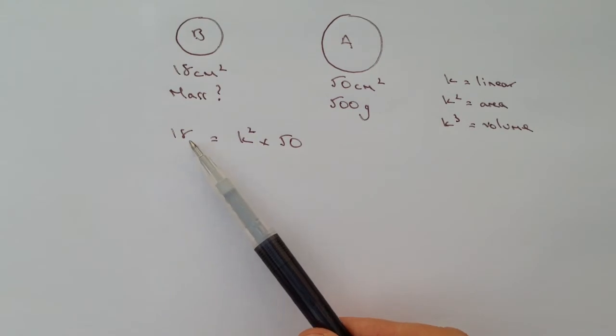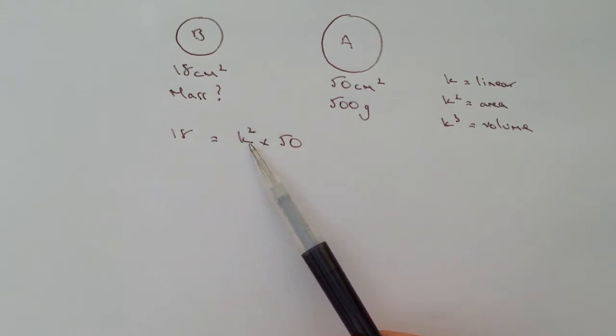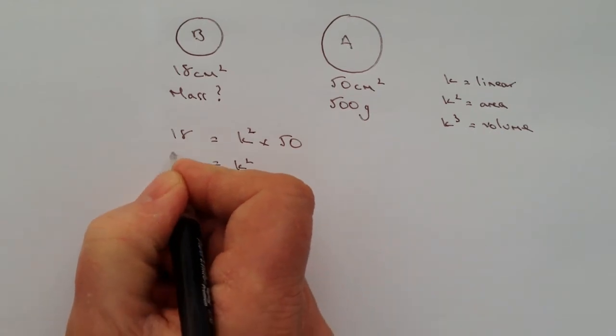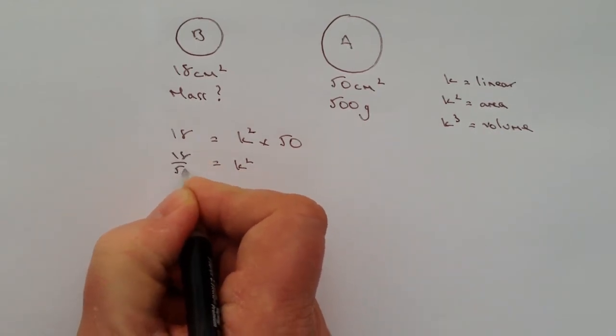So now we've got that 18 equals something squared times 50, this value of K. This constant allows us then to work out the value of K because K squared equals 18 over 50.